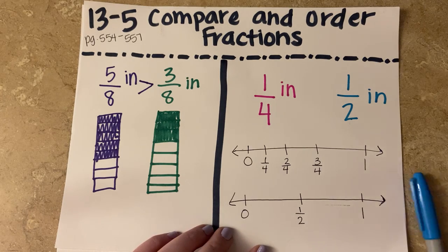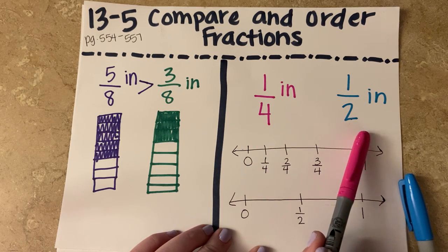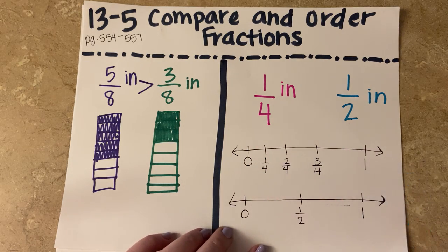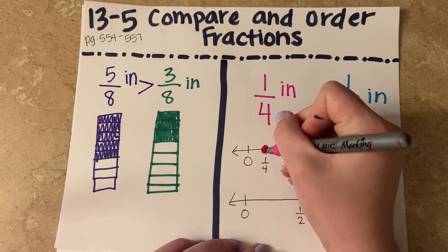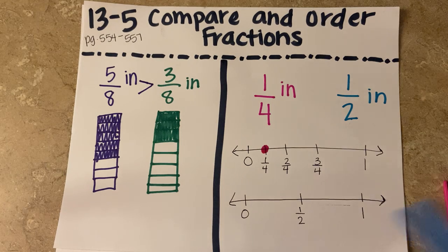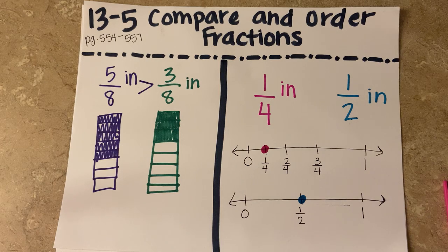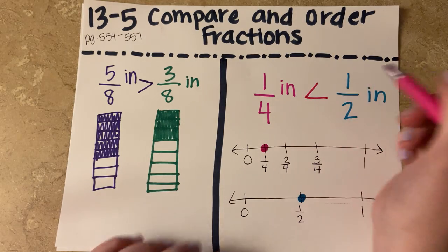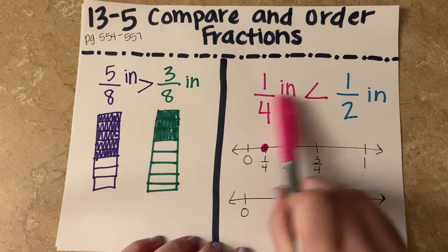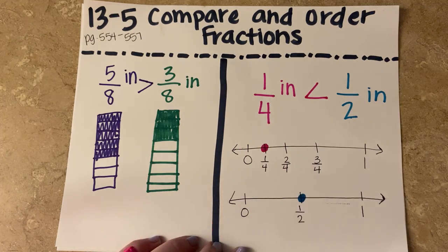So I'm trying to figure out which one is greater, one-fourth of an inch or one-half of an inch. So on this number line, one-fourth of an inch is right here. And on this number line, one-half is here. So looking at these two number lines, you can tell that one-fourth of an inch is less than one-half of an inch. Or you can read it this way and say one-half of an inch is greater than one-fourth of an inch.